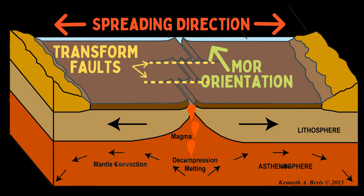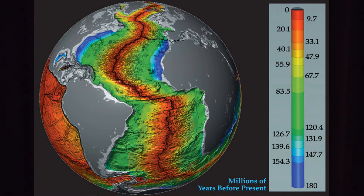The spreading direction is parallel to the transform faults and perpendicular to the spreading segments. Using the mid-ocean ridge in the South Atlantic Ocean as an example, you'll see that spreading occurs along north-south oriented ridges, but the spreading is actually perpendicular to the ridge orientation.